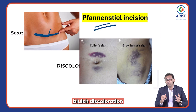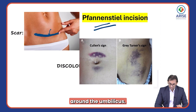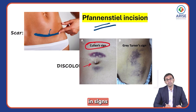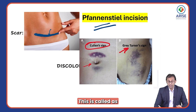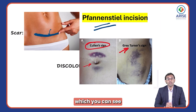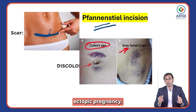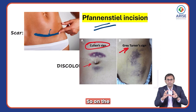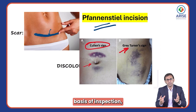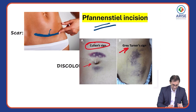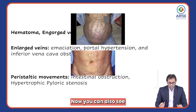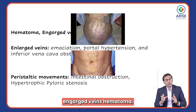You can also appreciate discoloration around abdominal areas. If you see bluish discoloration around the umbilicus, this is called Cullen's sign. Around the flank, this is called Grey Turner's sign, which you can see in a case of hemorrhagic pancreatitis and even in a case of ruptured ectopic pregnancy.